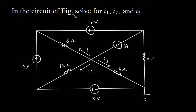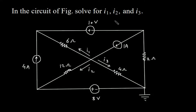In the circuit of figure, solve for I1, I2 and I3. We have to find I1, I2, and I3 in this circuit using mesh analysis.